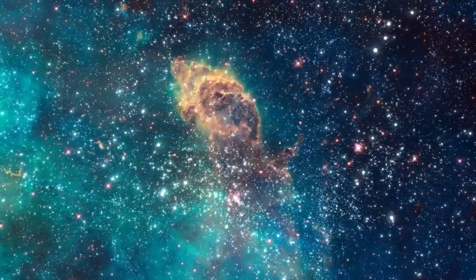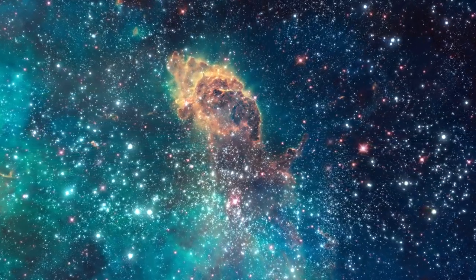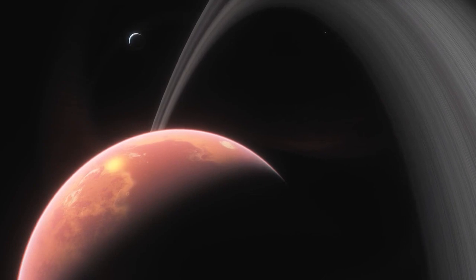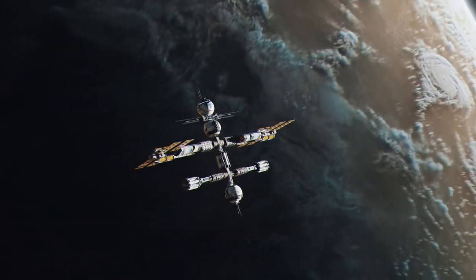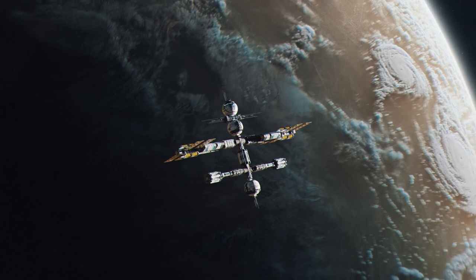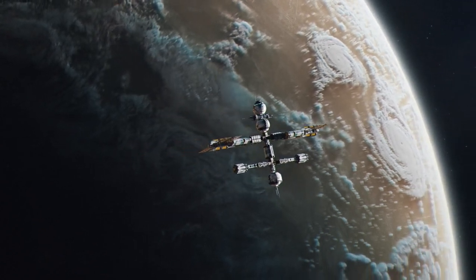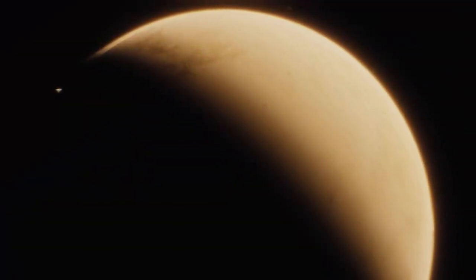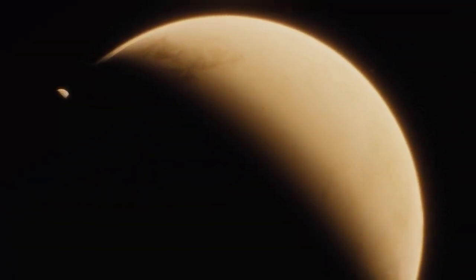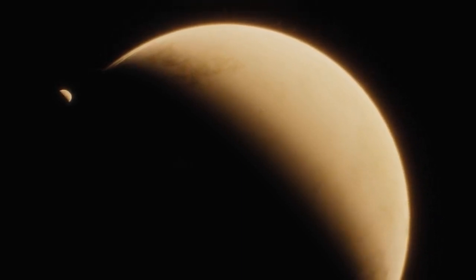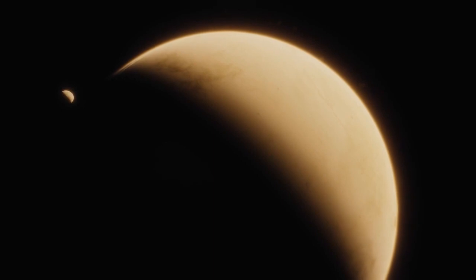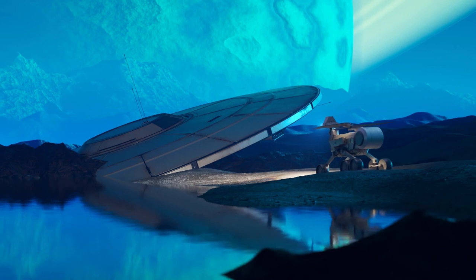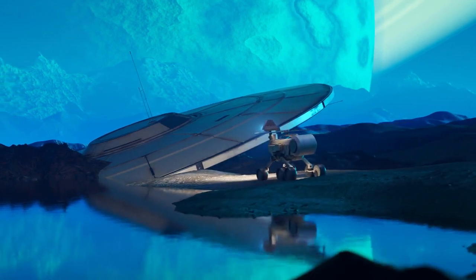In recent years, scientists have made significant strides in our understanding of the universe, including the discovery of thousands of exoplanets, planets outside our solar system that could potentially host life. Some of these planets are located in what is known as the habitable zone, the region around a star where conditions are just right for liquid water and the possibility of life. The discovery of exoplanets has reignited interest in the search for extraterrestrial life and has given scientists hope that we might find concrete evidence of it in the coming years. With new telescopes and technologies being developed all the time, the possibility of discovering life beyond Earth is becoming increasingly likely.